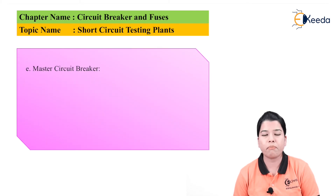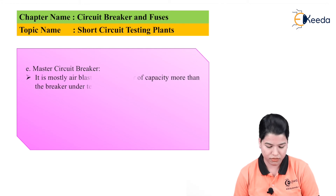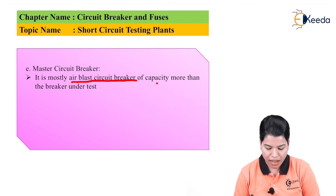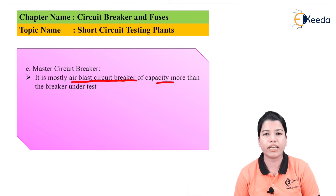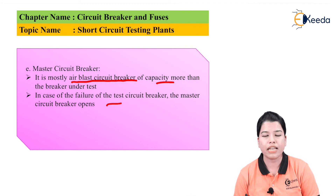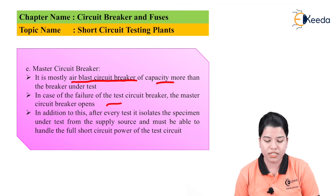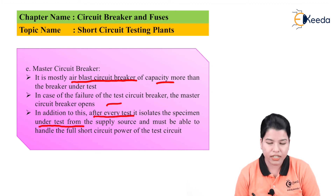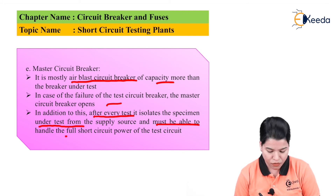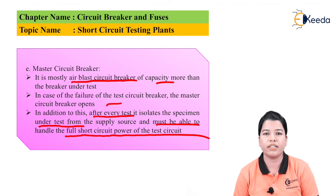The master circuit breaker is mostly an air-blast type with capacity greater than the breaker under test. In case of failure of the test circuit breaker, the master circuit breaker will open and protect the system. After every test, it isolates the specimen under test from the supply source and must be able to handle the full short circuit power of the test circuit breaker.